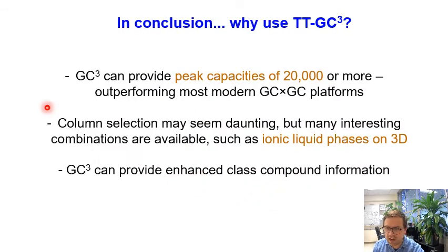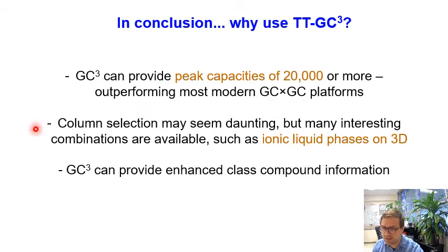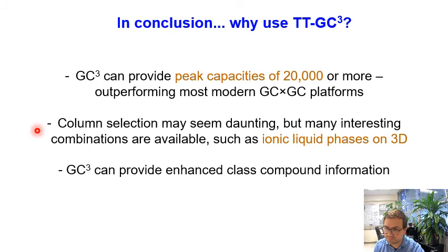In conclusion, GC Cubed can provide peak capacities of 20,000 or more, which outperforms most, if not all, modern GC×GC platforms. You might think that picking a column to use for each of the three columns may be a difficult choice to make. However, many interesting combinations are available now, such as using an ionic liquid phase on the third dimension, as shown here. Lastly, GC Cubed can provide enhanced compound class information, in particular if a better separation of one group of compounds is achieved on that third dimension separation column.